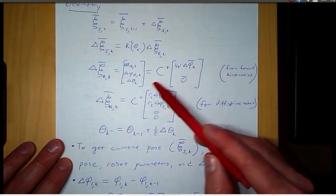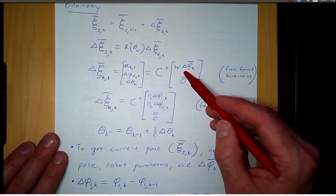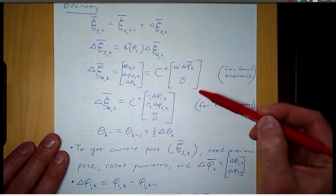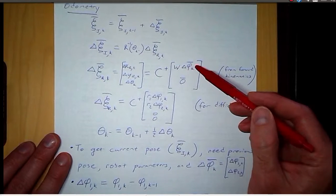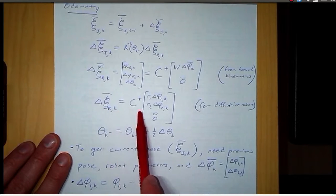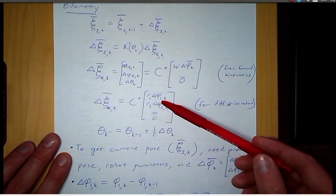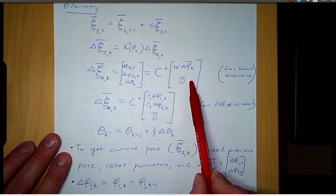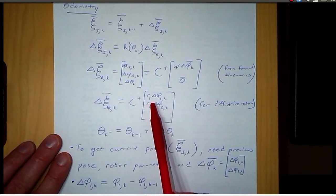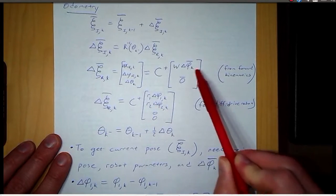We're going to use the forward kinematics equation, except instead of phi dot we have delta phi. So this is an approximation, whereas the velocity equation was an exact equation. This is the pseudo inverse of C, and then this vector is W times delta phi k, and then the zero vector. Rewriting all that, this is the same exact equation expanded for a differential drive robot. So we've got R1, delta phi 1 k, R2, delta phi 2 k, zero, zero.